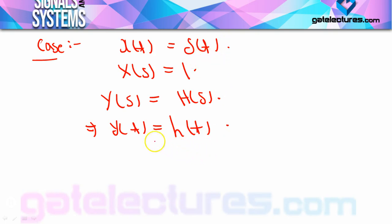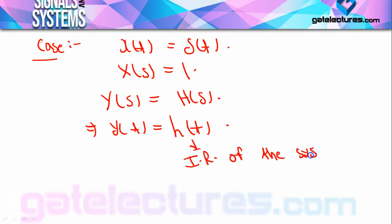So H(t) is a famous name — it is the impulse response of the system. In many books and in exam numericals, H(t) will be given to you by the name 'impulse response of the system'. Keep this point in mind.